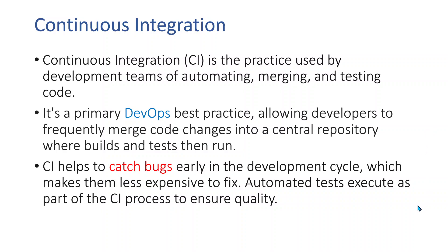First, let's try to understand what is Continuous Integration. By the name you can understand — Continuous Integration is a process of merging all your code. It allows developers to frequently merge code changes into a central repository or version control system. Continuous Integration is the practice used by development teams for automating merging and testing of code. It is the primary DevOps best practice, which allows developers to frequently merge code changes into a central repository like Git or any other version control supported by Azure DevOps.